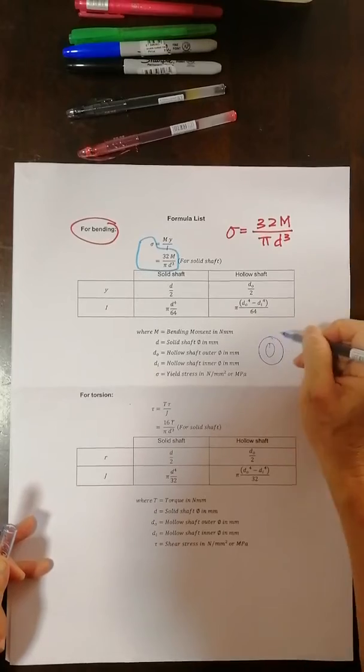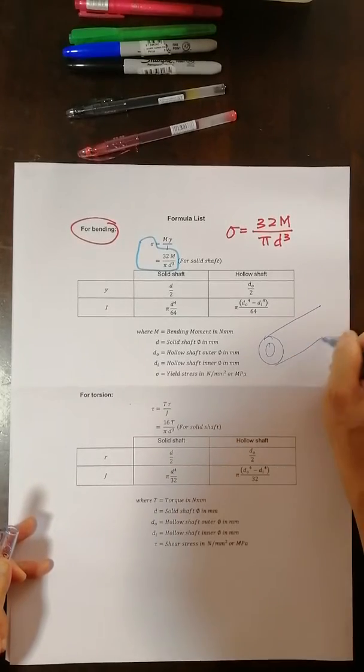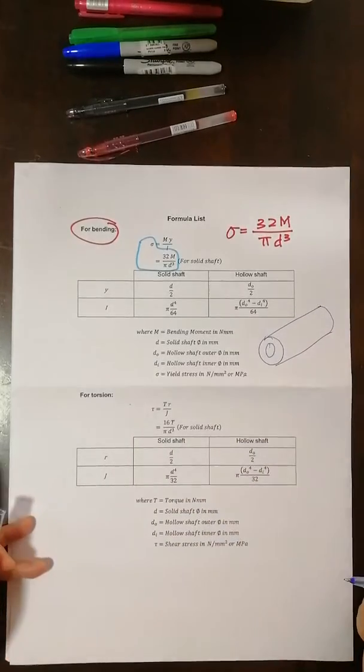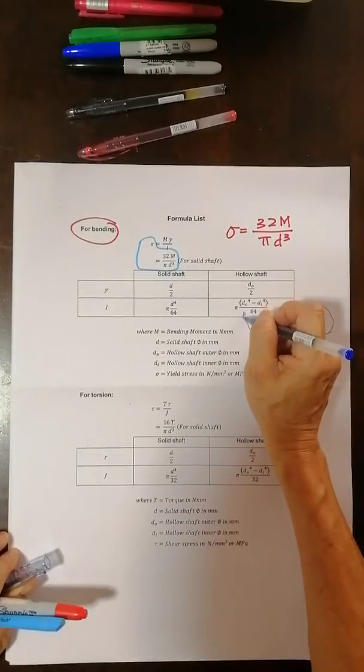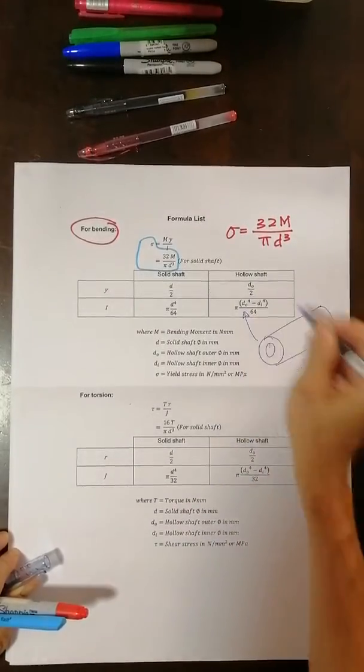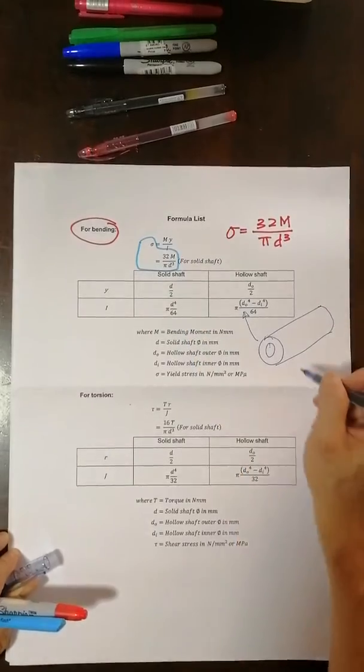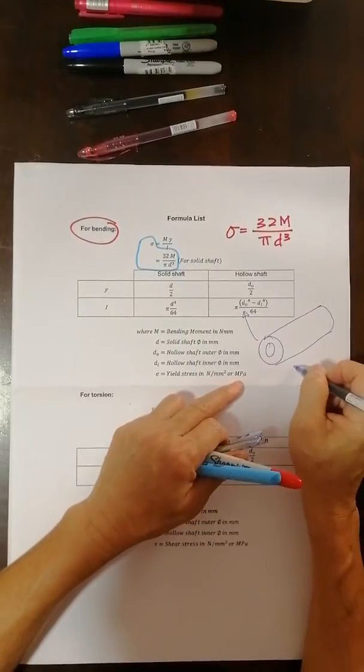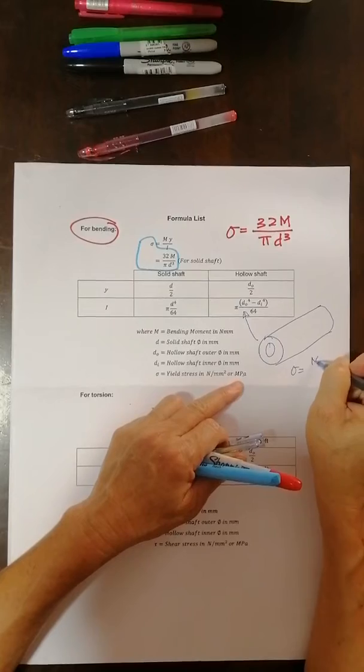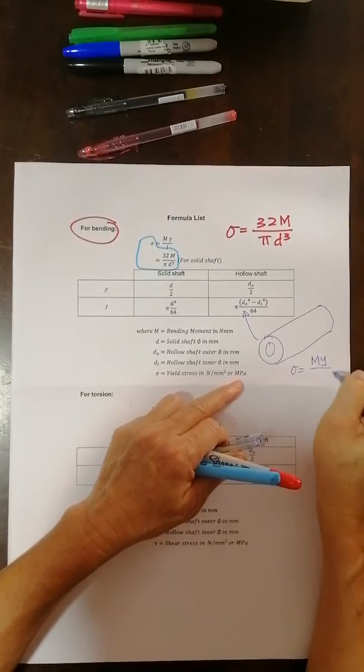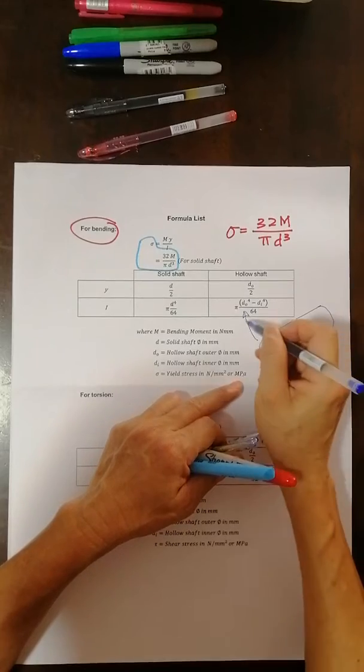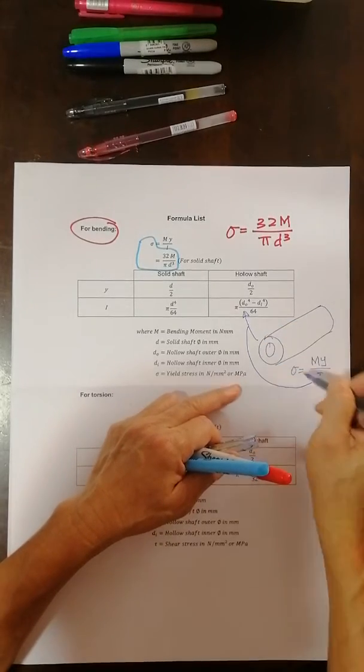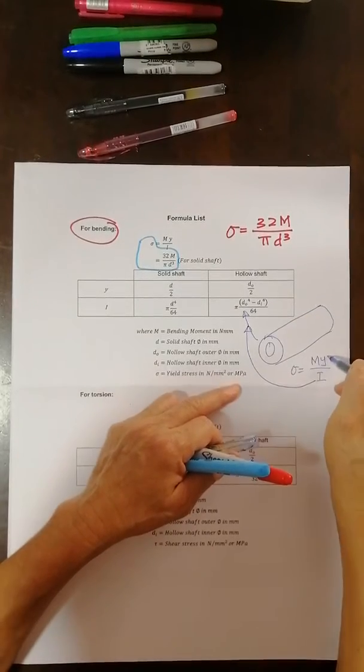If you use a hollow shaft, then the equation will be this. And you will substitute all this into the first equation. So the equation no longer will be this, will be stress equal to MY over I, where I equals—where I is this. This I. And Y will be this.